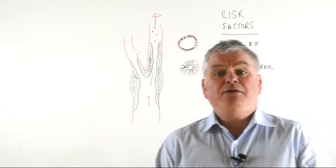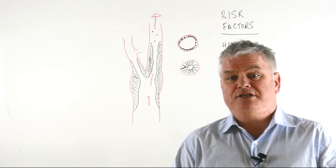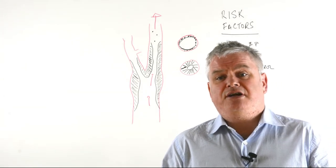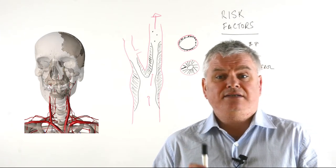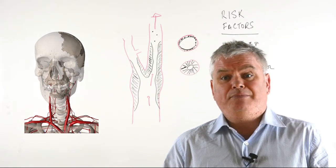Hi, today we're going to talk about the carotid arteries. Now the carotid arteries are found in the neck. You have one on the left and one on the right, and their job is to supply blood to the brain.